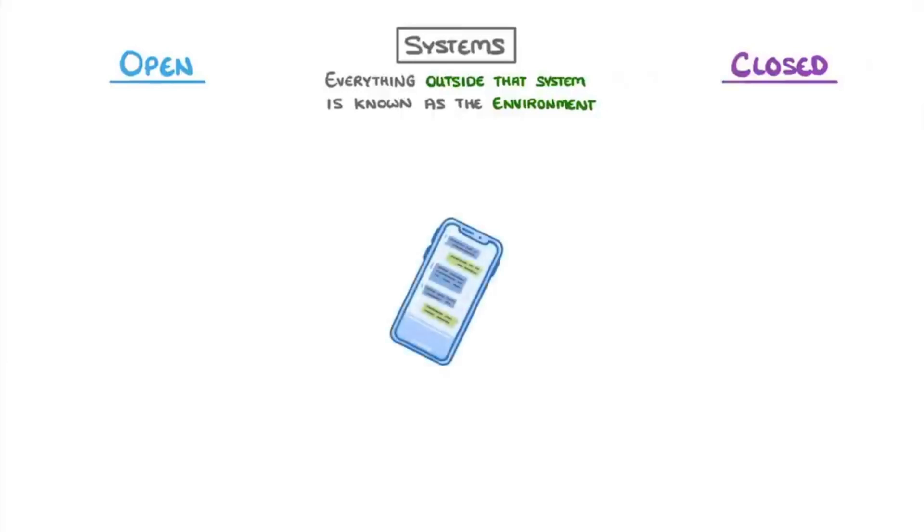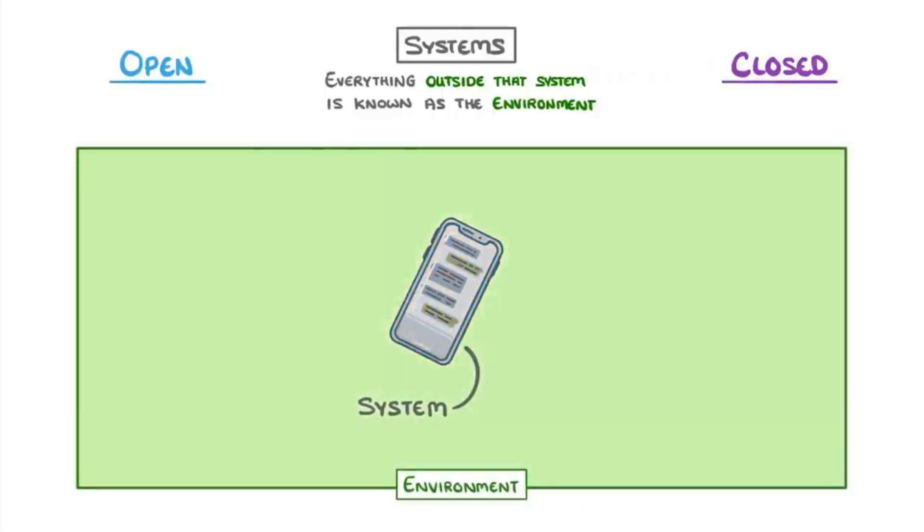So, in our phone example, the phone could be considered the system, and everything else in the universe would be the environment. In this case, we would say that the phone is an open system, because energy and matter can freely move between the phone and the environment.